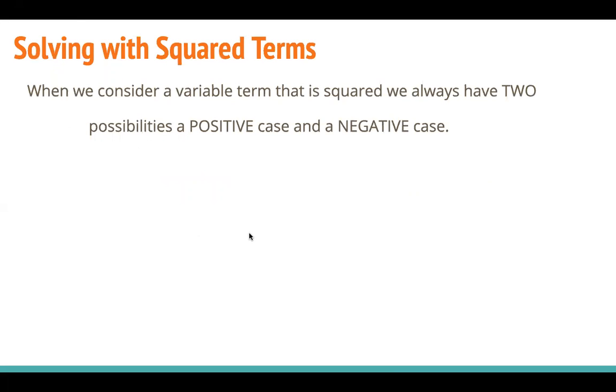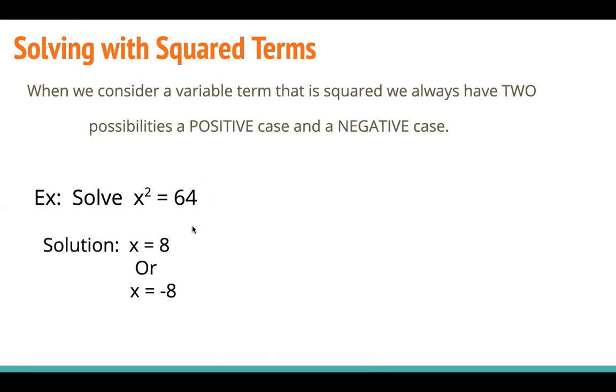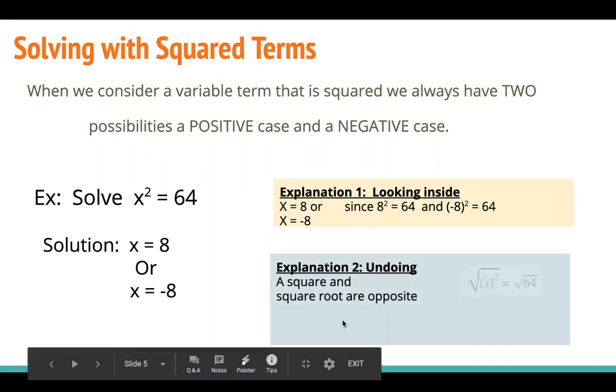Okay, so if I have a squared term, when we consider a variable term that is squared, we always have two possibilities: a positive case and a negative case. Here's an example. If x squared equals 64, x could be 8 or x could equal negative 8. The reason is, 8 squared is 64 and negative 8 squared is 64. So both are possible solutions. To undo a square, I square root both sides. When I add the square root in, I always get this plus or minus answer. So really my answer could be positive 8 or negative 8.